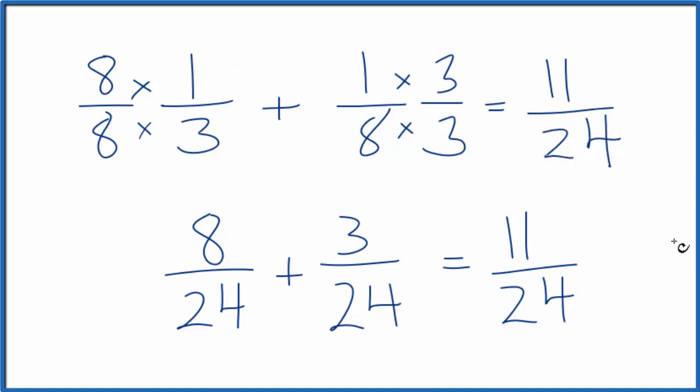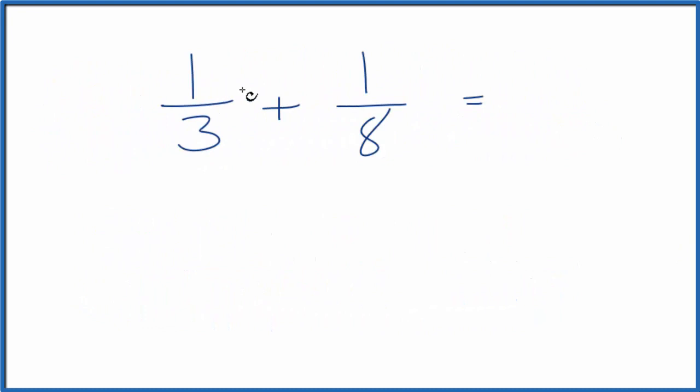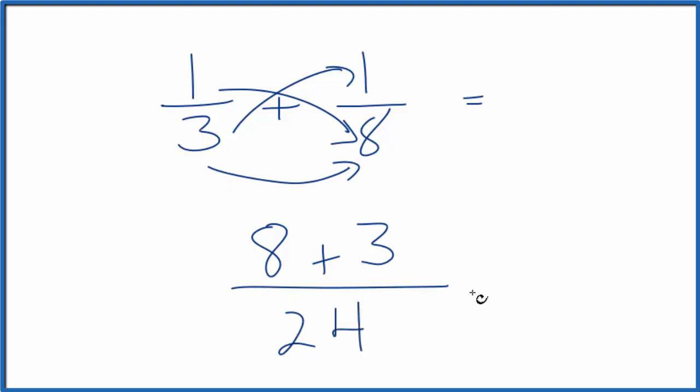Let's quickly check our work. So I could multiply one by eight, that would just be eight, plus three times one, that would be three. And then the denominators, I'd multiply those. Three times eight is twenty-four. So eight plus three is eleven, we bring the twenty-four over.